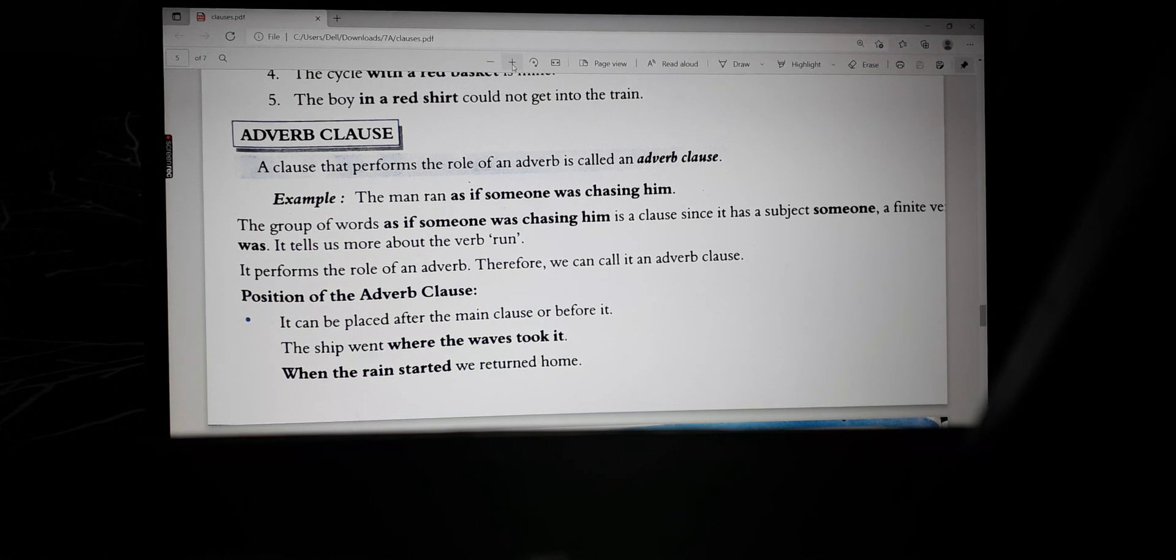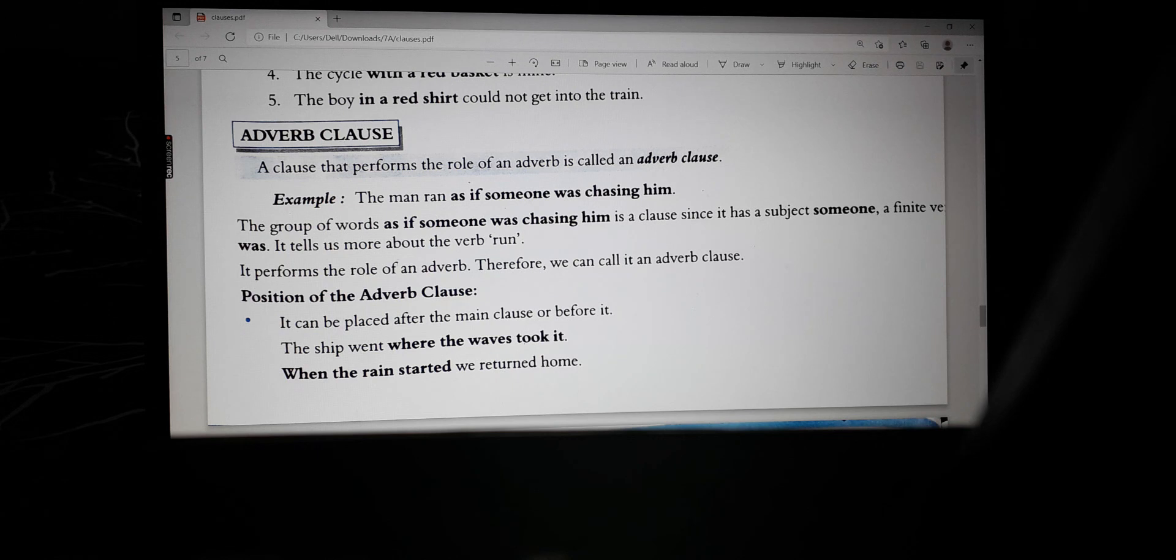So that is the reason adverb, in other words, you might have done that drill about the action of a person. So that is the reason here we have a complete clause: someone, finite verb was, and a verb run. Therefore, this sentence is an adverb clause. It performs the role of an adverb. Therefore, we can call it an adverb clause.